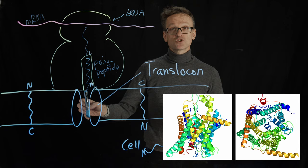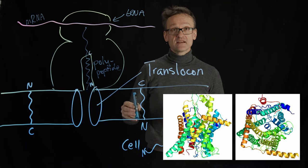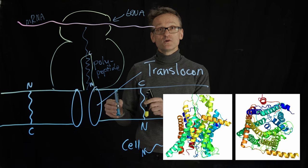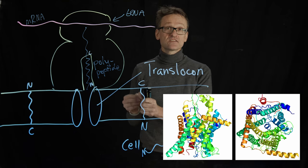They will come to the translocon. They will move out one finished helix at the time, and then these helices float around in this fluid mosaic model, and then they will pack against each other.